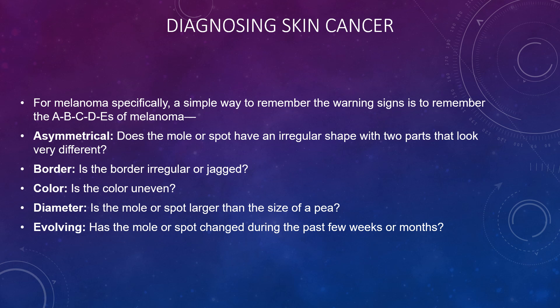Symptoms of skin cancer include the five warning signs known as the ABCDEs. Asymmetry — does the mole or spot have an irregular shape with two parts that look very different? Border — is the border irregular or jagged? Colour — is the colour uneven? Diameter — is the mole or spot larger than the size of a pea? Evolving — has the mole or spot changed in the past few weeks or months?